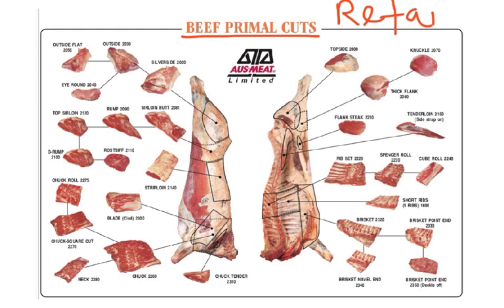Processing equipment is also important: as processors move to more automatic equipment rather than manual labour, the yield and size of primal cuts become more important. Ultimately though, the size of retail cuts is more to do with consumer preference than anything else.